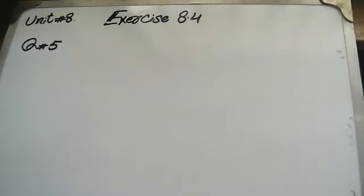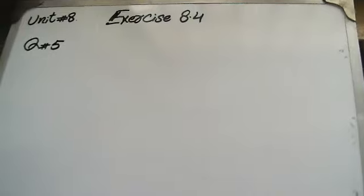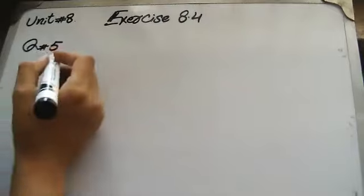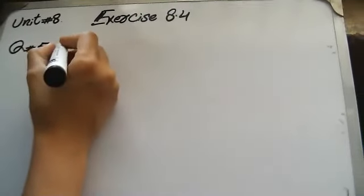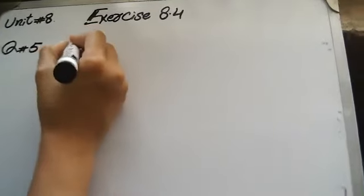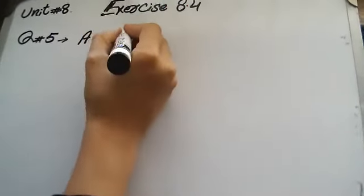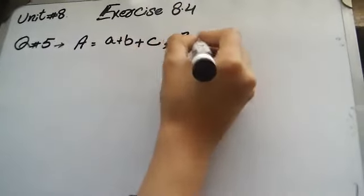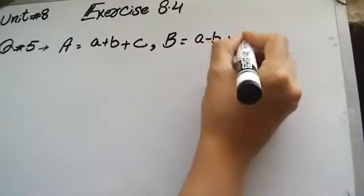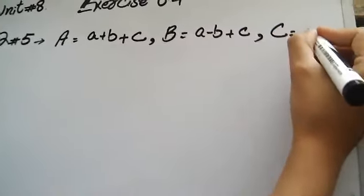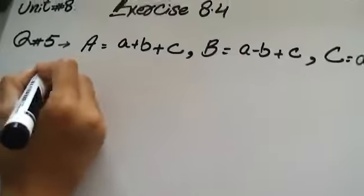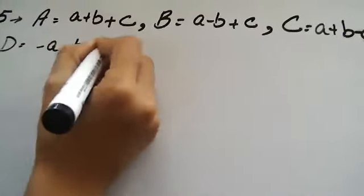Now we will start with Question 5. You have different values A, B, C, and D. You have to find: A — the first part is A plus B plus C; B — find A minus B plus C; C — find A plus B minus C; and the last part D is equal to minus A minus B minus C.